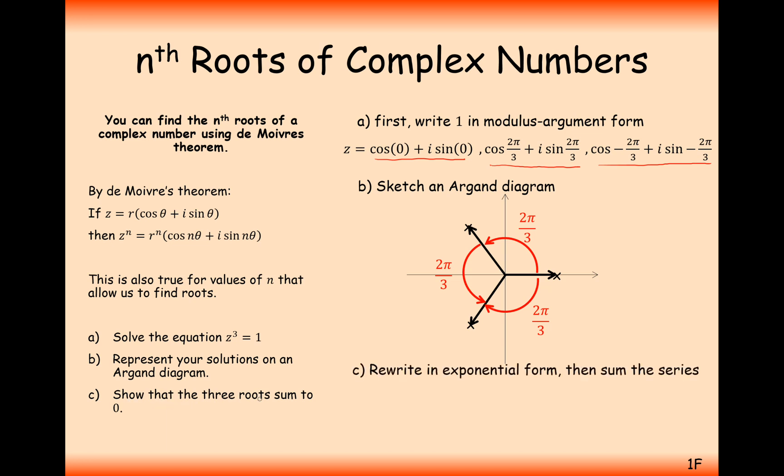And moving on to part C now, show that the three roots will add together to make 0. Well, if we rewrite them in exponential form and then sum the series, we'll have to rewrite the third one having an argument of 4π by 3. Then here A is 1, the starting value of the sequence is 1. The multiplying factor is e to the 2π by 3i. And then we have three terms in this sequence we want to add together. Applying the geometric series formula, we get 0. The reason we get 0 is because if you look at this component here, we're going to get e to the 2π by 3i to the power of 3. Multiply your powers together and we get e to the 2πi. If we cancel this bit out and cancel this bit out with each other, e to the 2πi, that's just 1. So 1 minus 1 gives us 0.